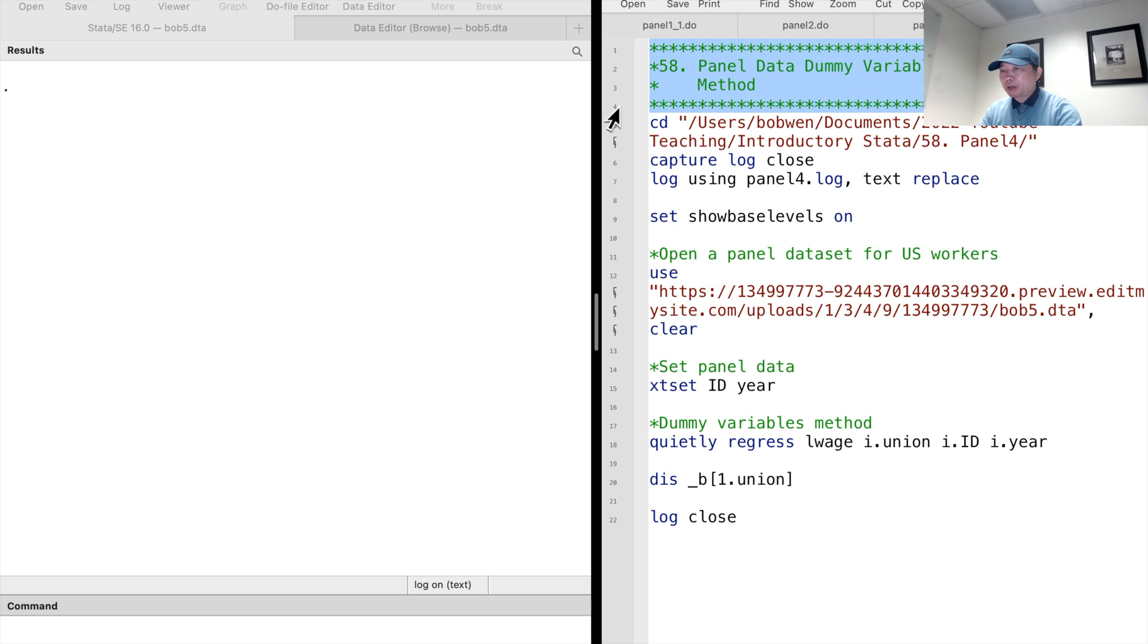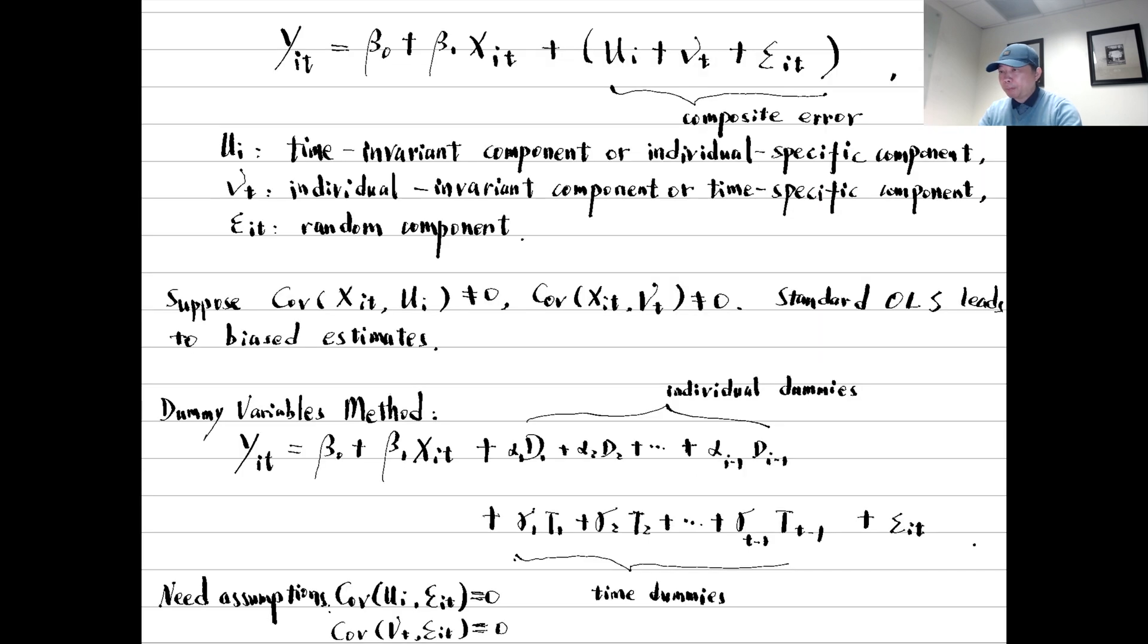We assume that the error term contains three components: the time-invariant component, the individual-invariant component, and the random component.